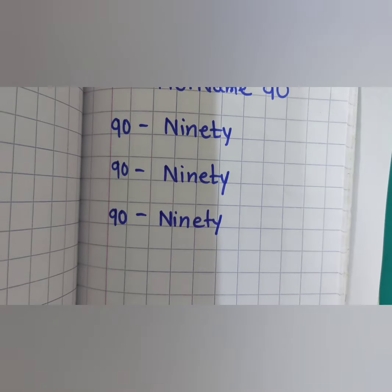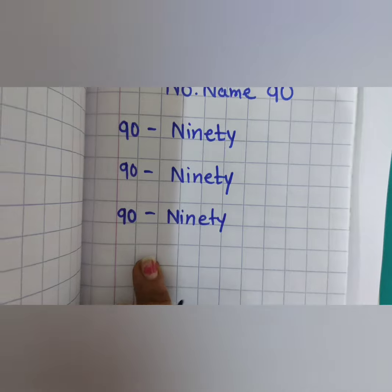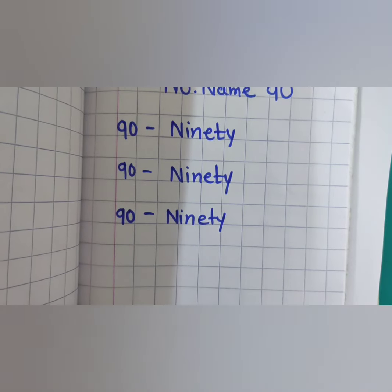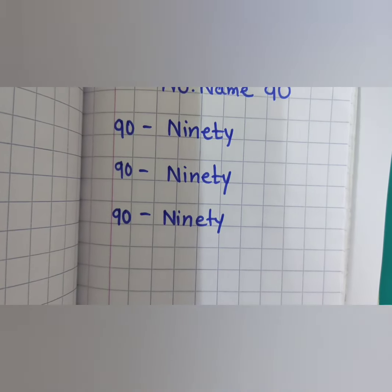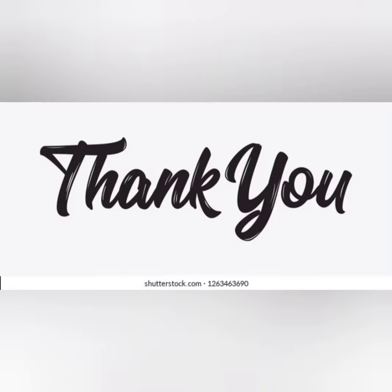You have to skip one line, write it down. Skip one line. 90 - N-I-N-E-T-Y. NINETY.